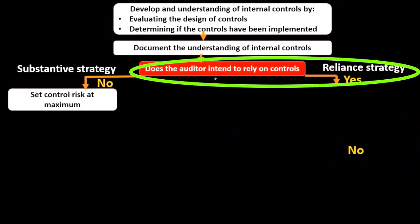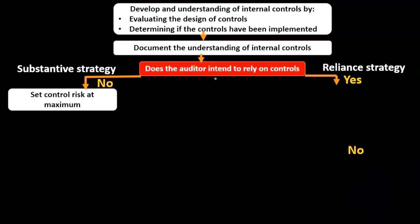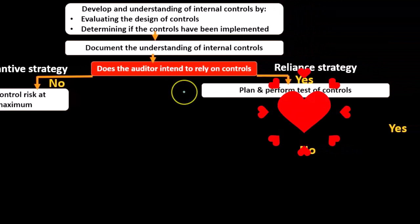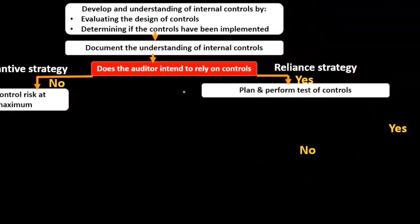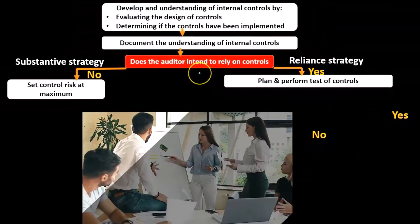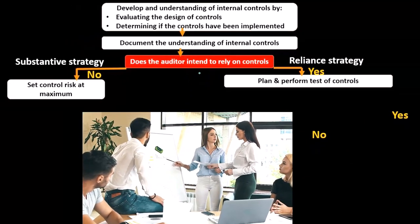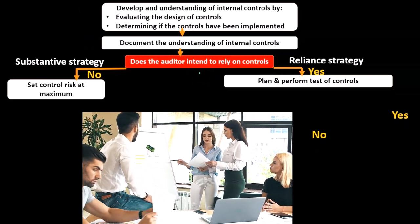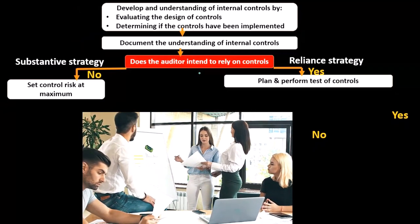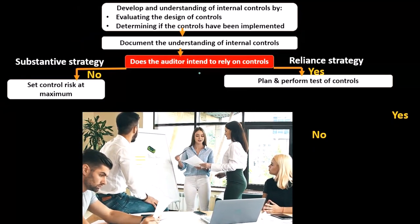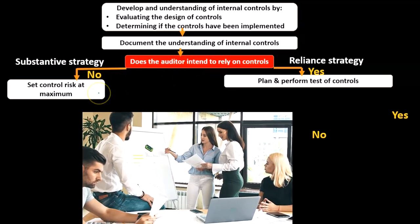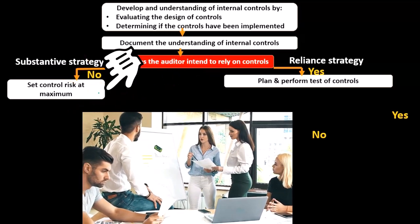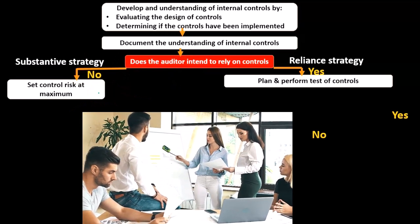If we can rely on the controls — which we'll hopefully be able to do to some degree for large organizations and publicly traded companies — then we're going to look at a reliance strategy and plan and perform tests of controls. Testing the checks and balances in the system should be easier than checking the end result of all the transactions.